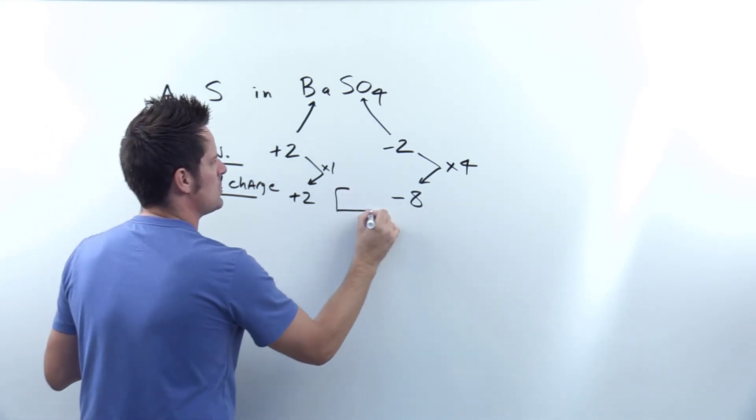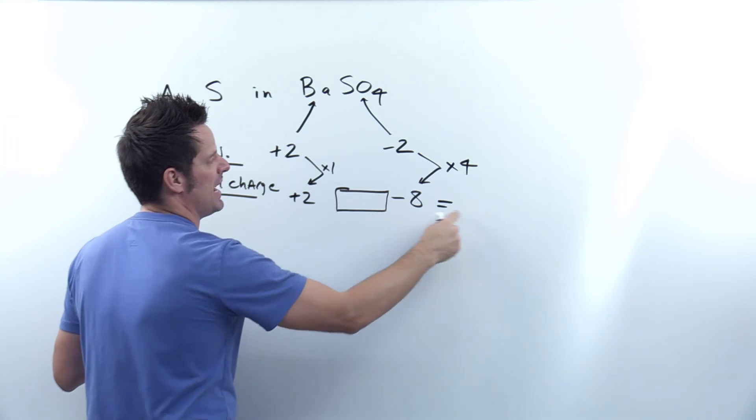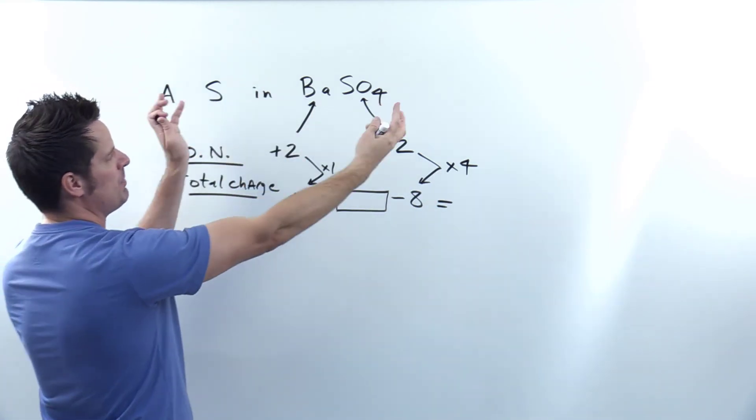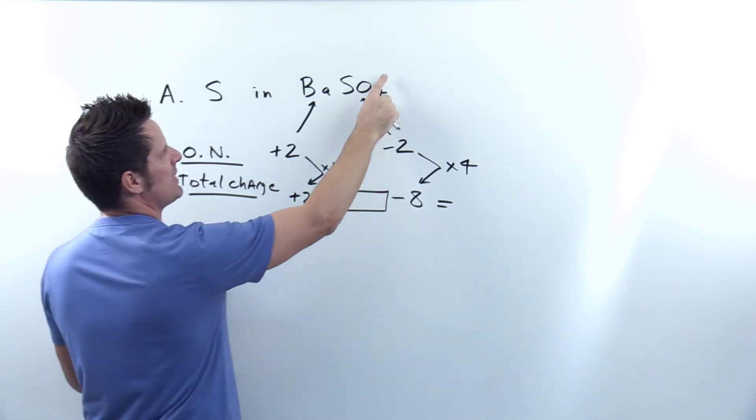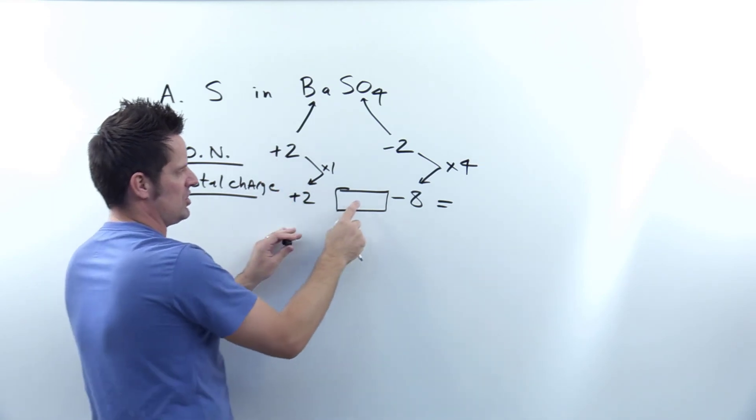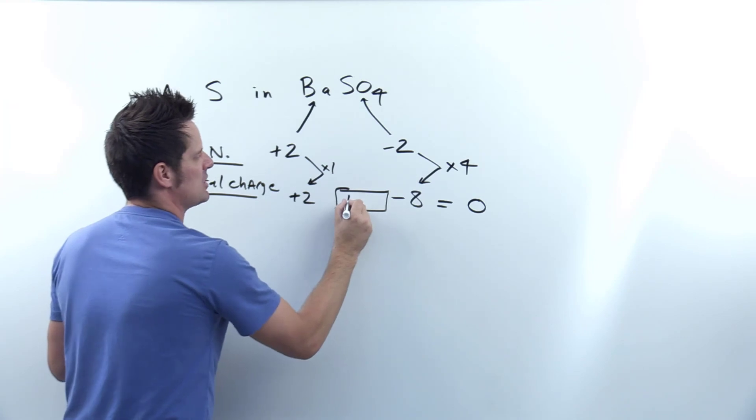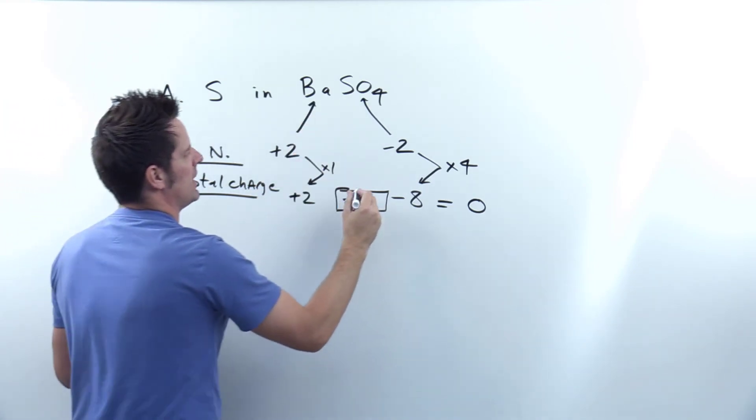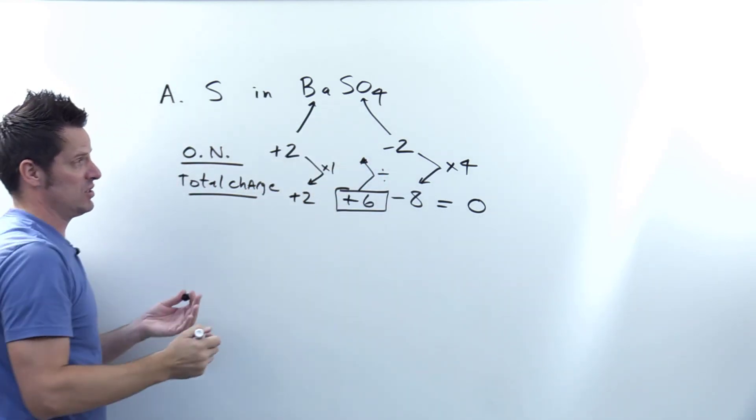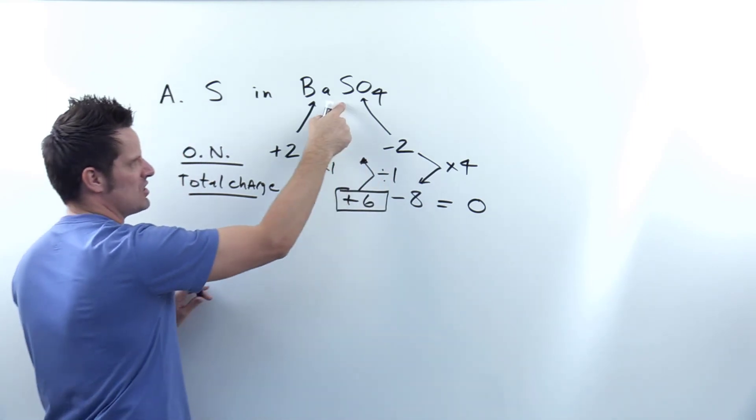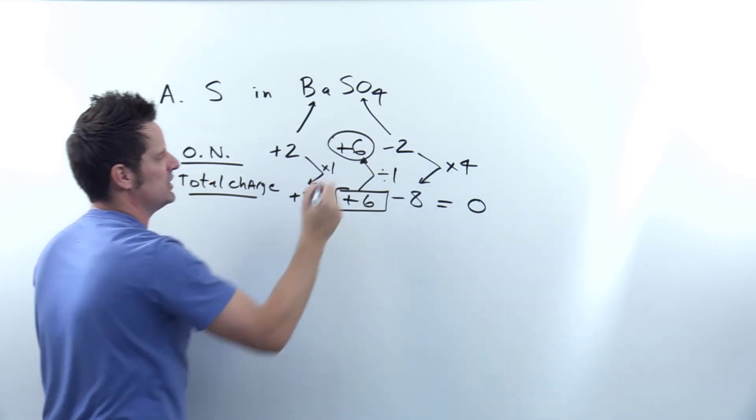The number that goes in here for sulfur has to be such that when you add it together with plus two and minus eight, it equals the total charge for the entire compound, which is zero because there's no floating charge. So something plus two minus eight equals zero. That something is plus six for the sulfur. To get back to sulfur's oxidation number, I divide it by whatever the subscript is for that sulfur, which is one. Therefore, that is its oxidation number, plus six.